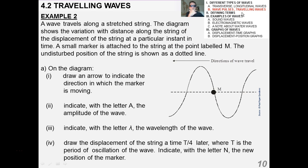A wave travels along a stretched string. The diagram shows the variation with distance along the string with displacement. So, again, this is as if you had a camera on the side of the string, taking a picture of it. This is what it would look like at that instant in time. A small marker, like a piece of tape, is attached to the string at the point labeled M. The undisturbed position of the string is shown as the dotted line. Draw an arrow to indicate the direction in which the marker is moving. Well, at this instant, the marker is actually moving down because this trough is moving over to the left, and that marker is dropping down into it. Indicate with the letter A the amplitude of the wave. You could do that in a couple of different places. Letter lambda, the wavelength, very straightforward stuff.